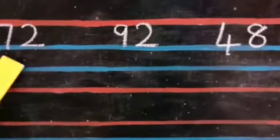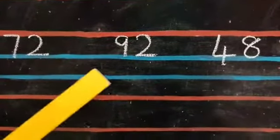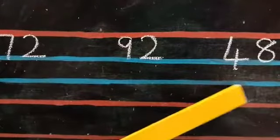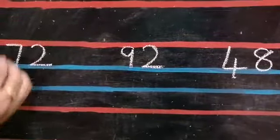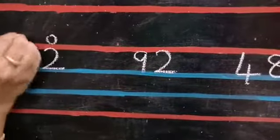And next question, children. 72, 92, 48. When two numbers are there, it is called two digit number. And this is ones and this is tens.